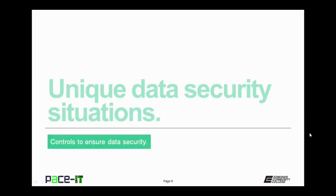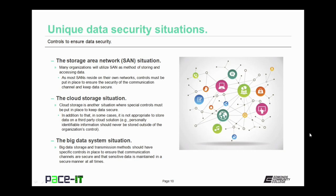It's time to conclude with a brief discussion on unique data security situations. First up is the storage area network situation, or the SAN situation. Many organizations will utilize the storage area network as a method of storing and accessing data. As most SANs reside on their own networks, controls must be put in place to ensure the security of the communication channel and to keep data secure while it's in transit.